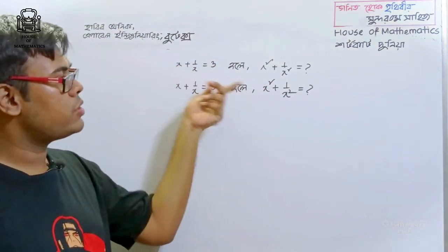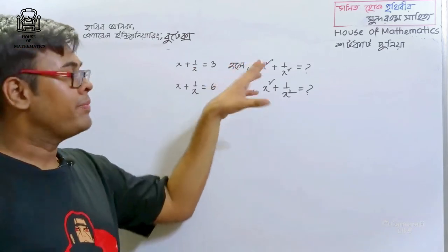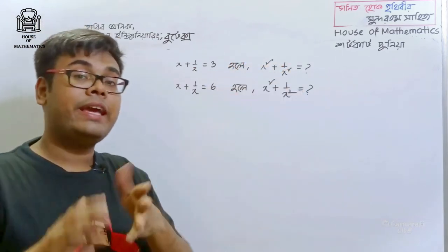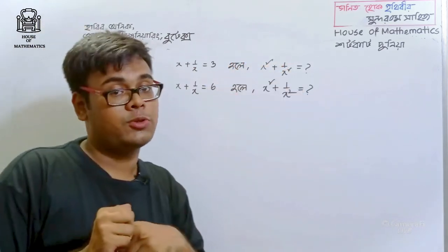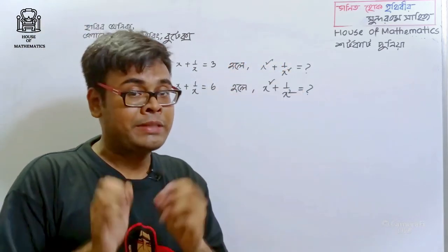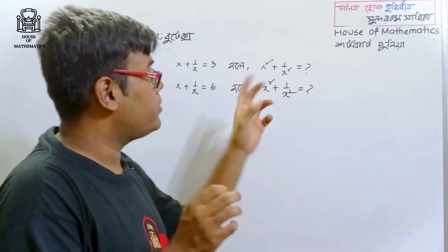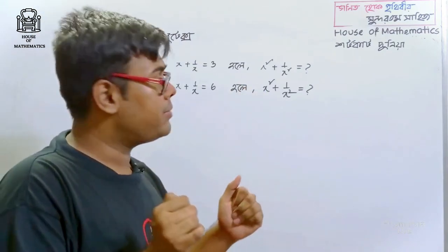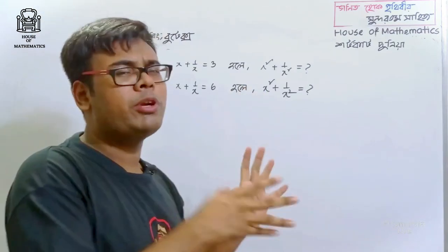If x plus 1 by x is like this, x squared plus 1 by x squared is like this. This is a very important question — this is a very popular question.